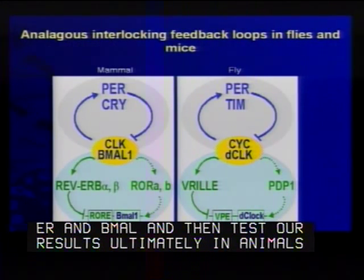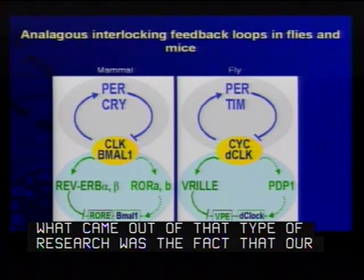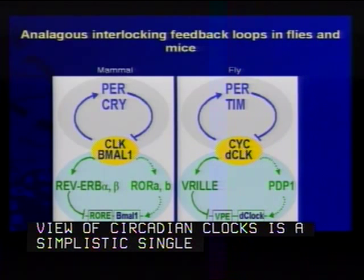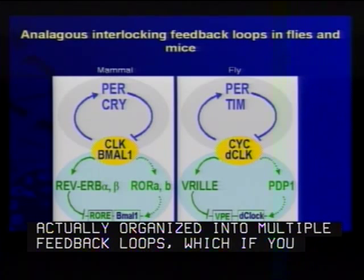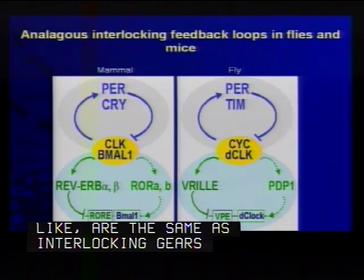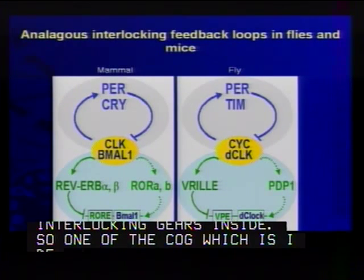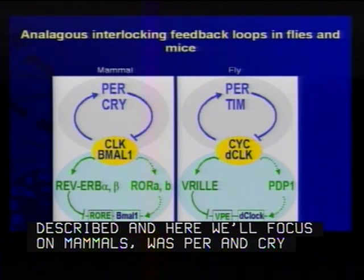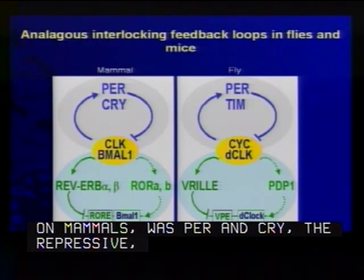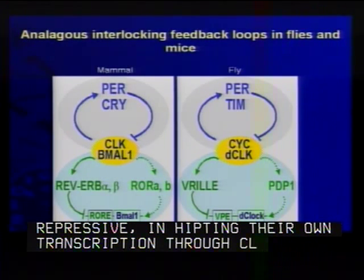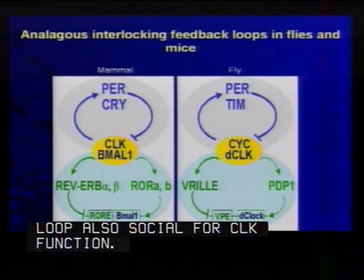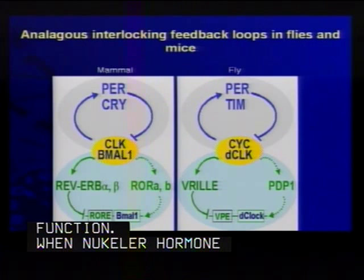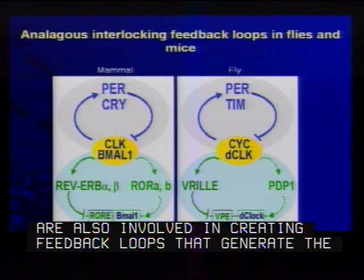What came out of that research was the fact that our view of circadian clocks as a simplistic single feedback loop was wrong — circadian clocks are actually organized into multiple feedback loops, like interlocking gears inside of an engine. One cog, which I described for mammals, was PER and CRY as repressors inhibiting their own transcription through CLOCK and BMAL. What we discovered was an interlocking loop also essential for clock function — nuclear hormone receptors, one a repressor (REV-ERB alpha) and others activators (the RORs), are also involved in creating feedback loops that generate circadian rhythmicity. The fly community discovered a similar elaborated loop structure, but using BZIP transcription factors for the accessory loops rather than nuclear hormone receptors.